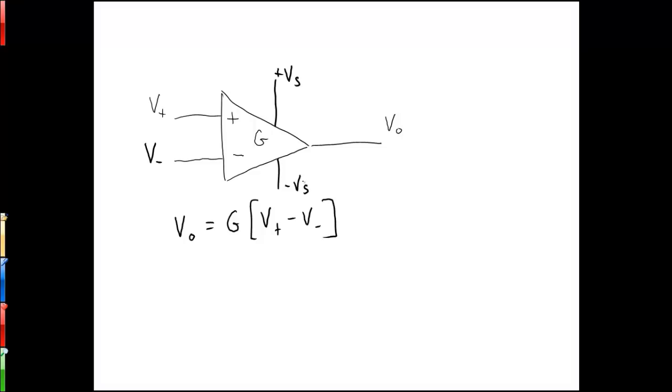Now, most op amps are not used in an open loop configuration like we see here. They're almost always used in a closed loop configuration where the output voltage is fed back, possibly through some resistors, to the inverting input terminal. And what this does is it allows us to adjust the gain of the op amp by putting in resistors and other components as necessary.